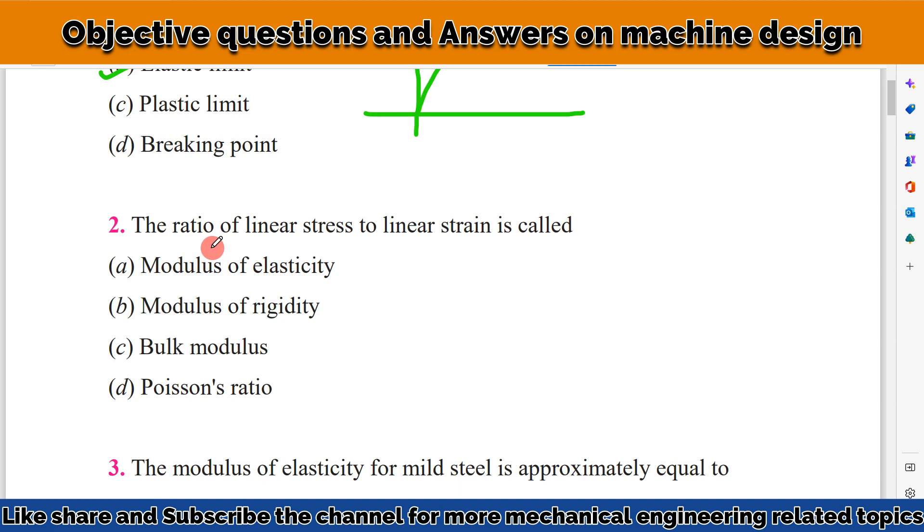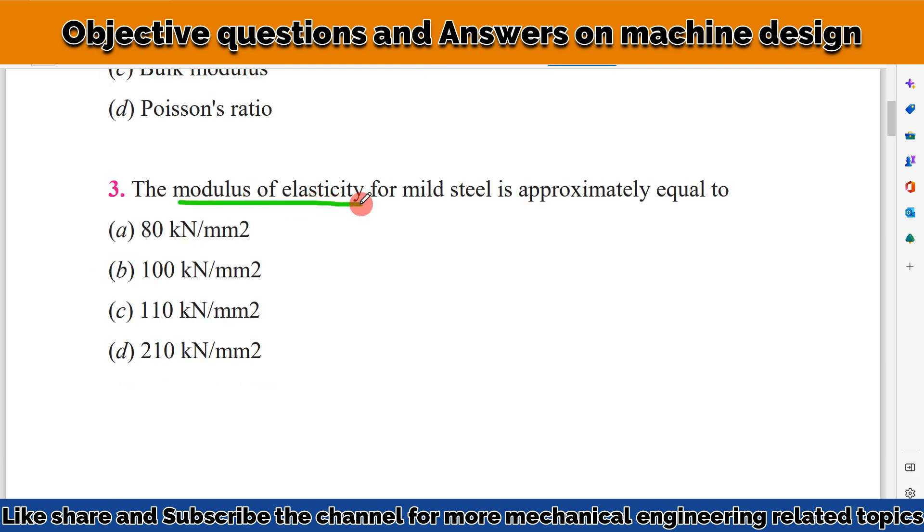Our next question is: the ratio of linear stress to linear strain is called? The ratio of linear stress to linear strain is called the modulus of elasticity. Modulus of elasticity for mild steel is 110 kN per mm square.